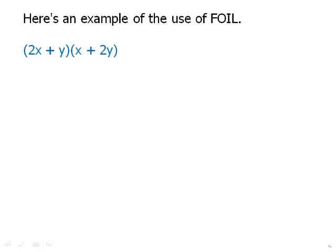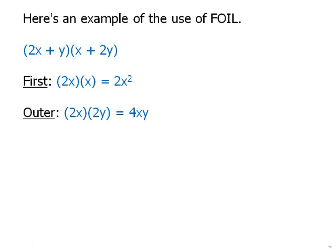Here we have two binomials. The first product we're going to take, the F, that's the first term. So that is the 2x from the first parenthesis and the x from the second parenthesis. So 2x times x is 2x². Now we're going to look at the outer products. That would be the 2x at the beginning and the 2y at the end. That product is 4xy.